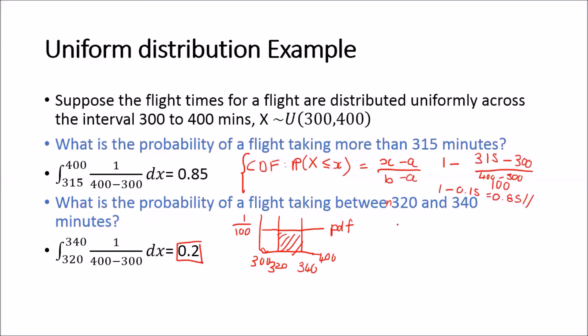So we can simply do this integration, which is very easy to solve, or we can use the CDF. And we will use it as follows: We will say the probability that X is less than or equal to 340, and we will subtract the probability that X is less than or equal to 320. Because that will give us the area in between these two. So if we plug that in, we will have (340-300)/100 subtracted by (320-300)/100. And we know that this is equal to (40-20)/100, which is 20/100, which is equal to 0.2.